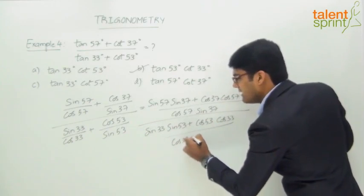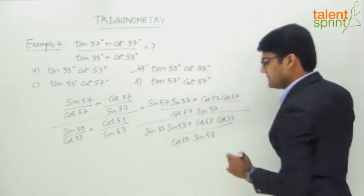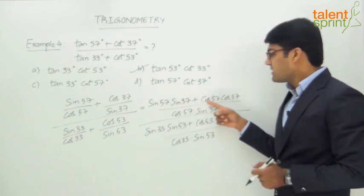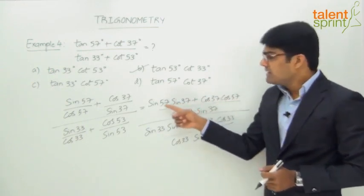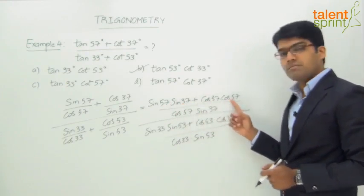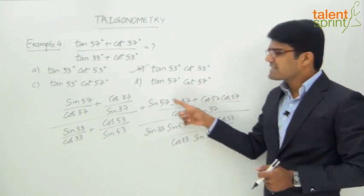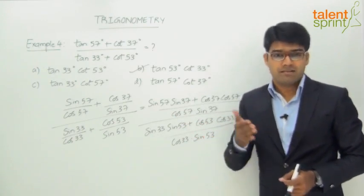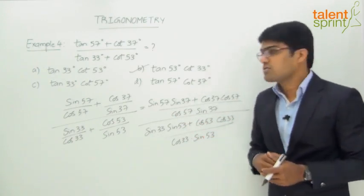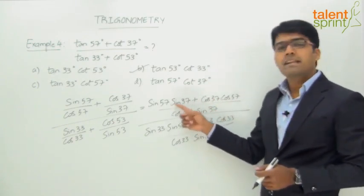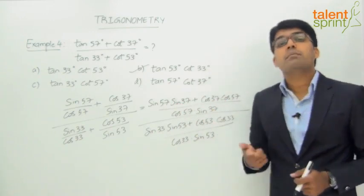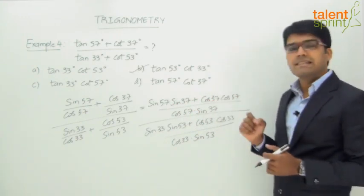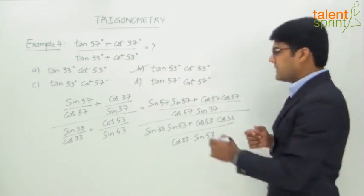Looking closely at the numerator: sin57·sin37 + cos37·cos57 is in the form cosA·cosB + sinA·sinB = cos(A - B). With A = 57 and B = 37, this gives cos(57 - 37) = cos20.